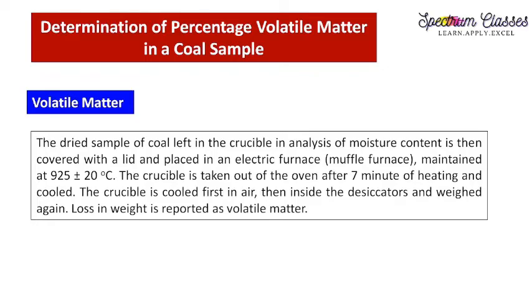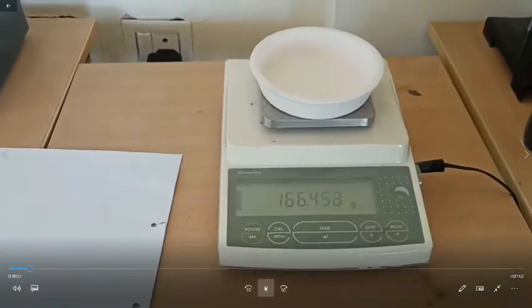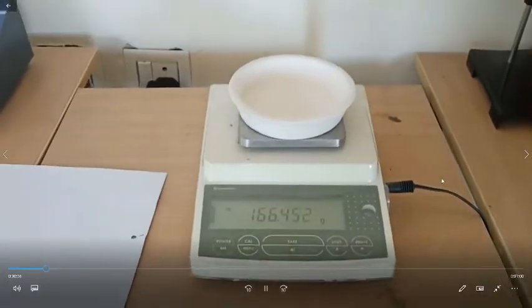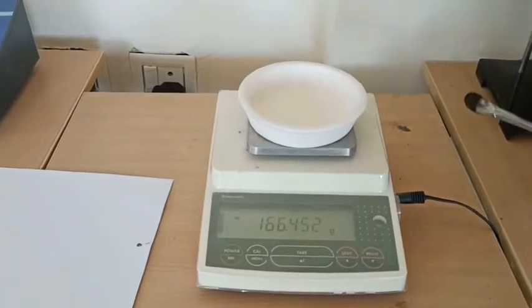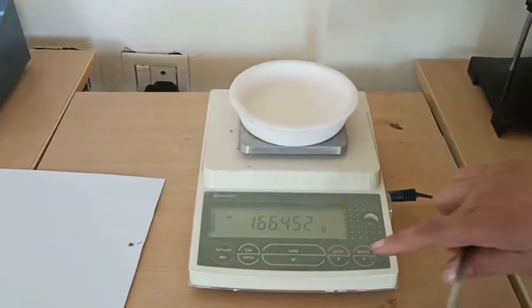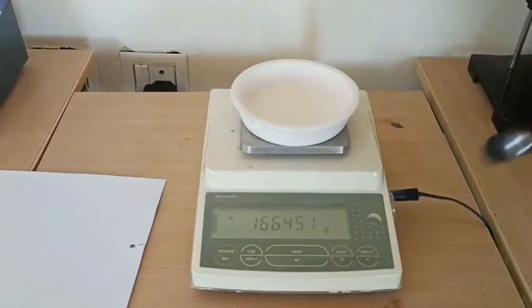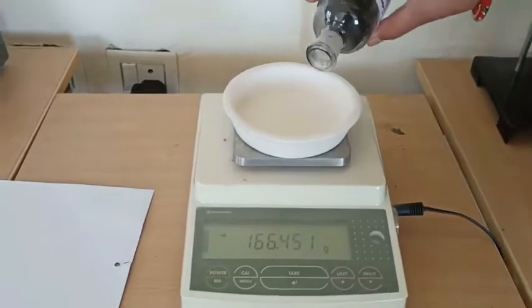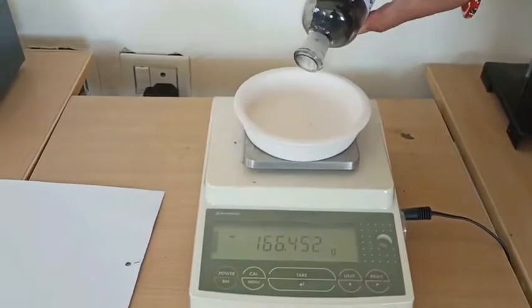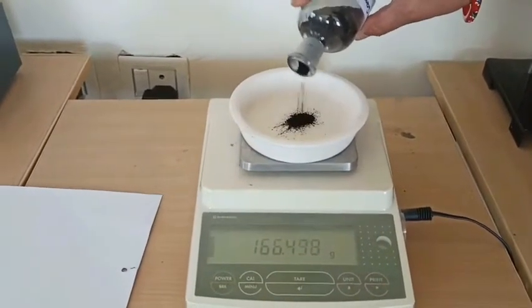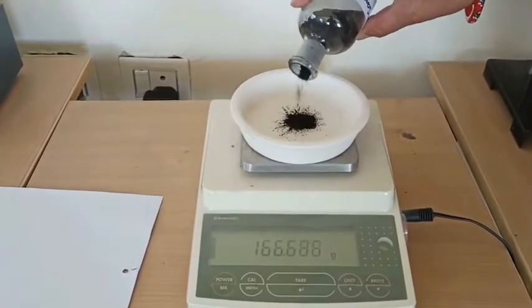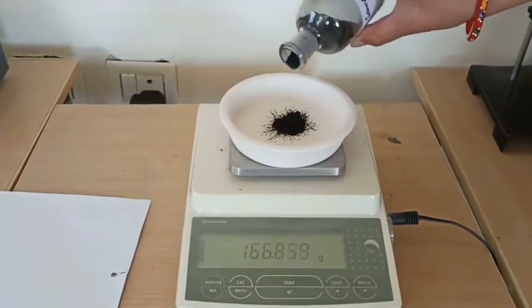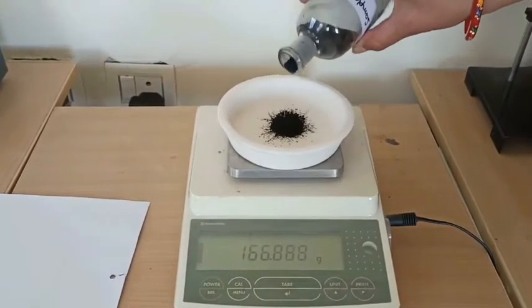Here we are going to weigh the coal sample which is obtained from experiment one — that is, after removing the moisture content. So this coal sample is from experiment one, removing moisture content.